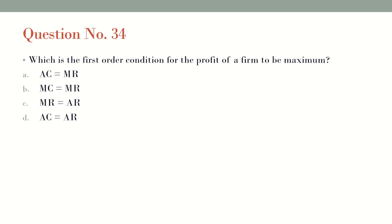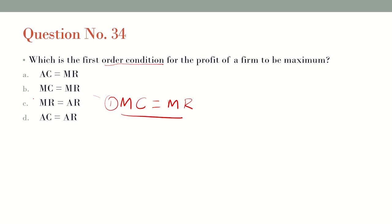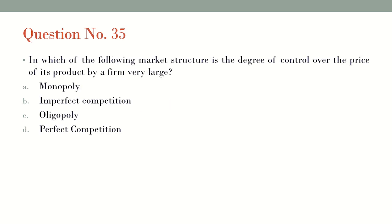Question number 34: What is the first order condition for the profit of a firm to be maximum? The first and foremost condition to make profits is that marginal cost should be equal to marginal revenue. This is the first condition for a firm to start earning profits. So the answer is option B: MC is equal to MR.